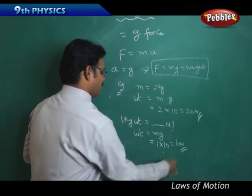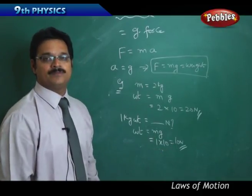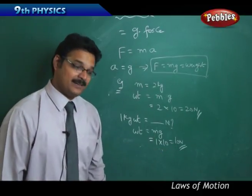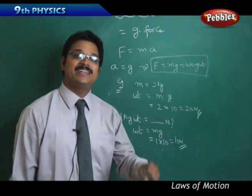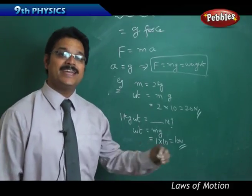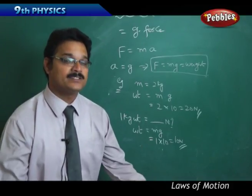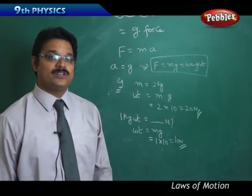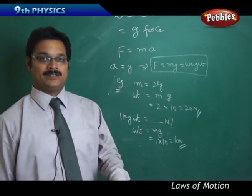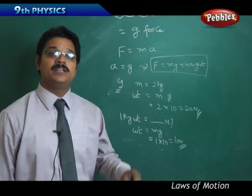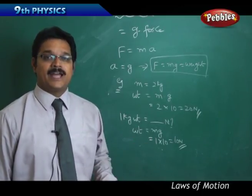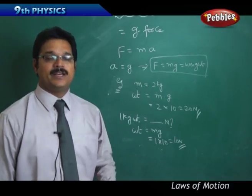So 1 kg weight equals 10 Newton. If I say that my bag's weight is 3 kg, then what is its original force? 3 kg into 10 is 30 Newtons. So it is 30 Newtons of the weight of the bag acting downwards towards the earth.